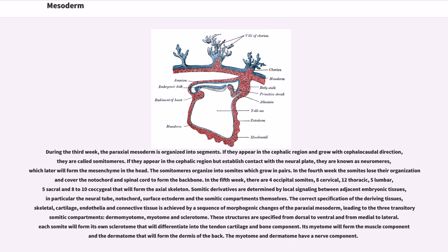During the third week, the paraxial mesoderm is organized into segments. If they appear in the cephalic region and grow with cephalocaudal direction, they are called somitomeres. If they appear in the cephalic region but establish contact with the neural plate, they are known as neuromeres, which later will form the mesenchyme in the head. The somitomeres organize into somites which grow in pairs. In the fourth week the somites lose their organization and cover the notochord and spinal cord to form the backbone. In the fifth week, there are 4 occipital somites, 8 cervical, 12 thoracic, 5 lumbar, 5 sacral and 8-10 coccygeal that will form the axial skeleton.